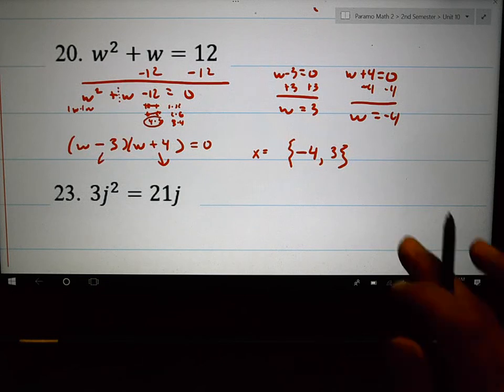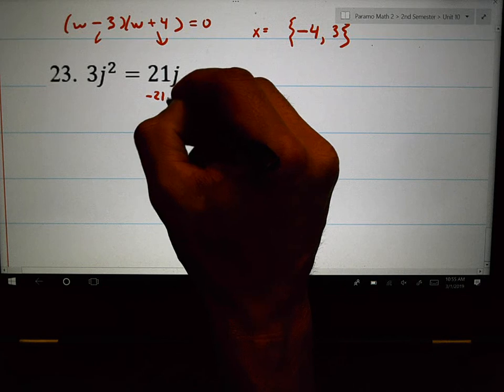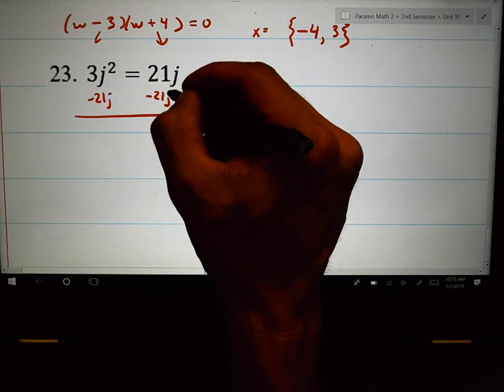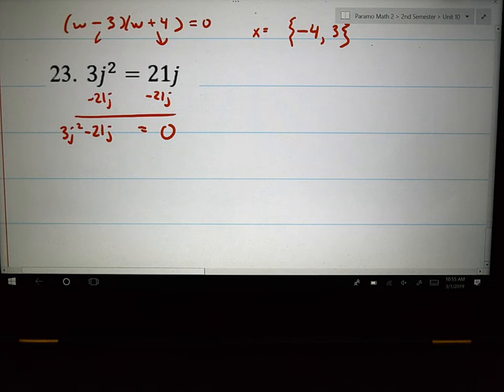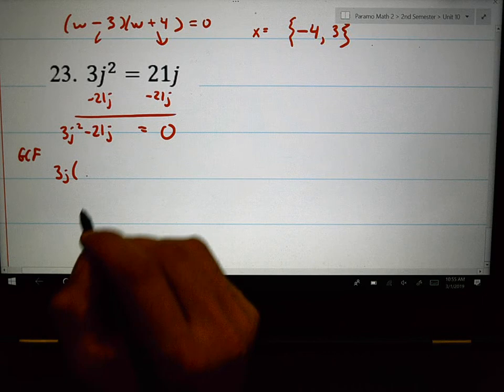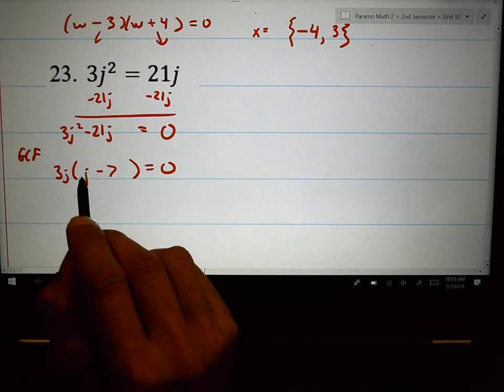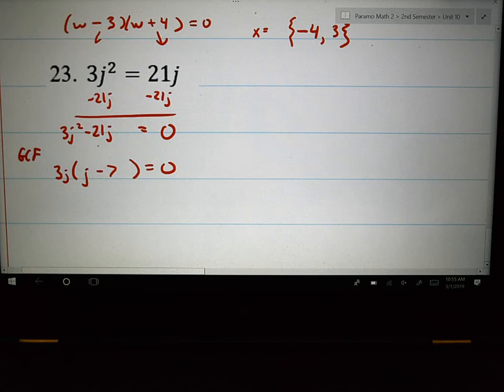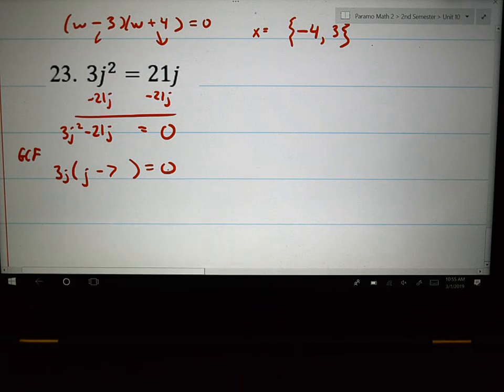My last example is 23. 23. It doesn't equal zero. Well, subtract the 21j. 21j minus 21j is zero. Then it will equal zero. And you can't put those together. 3j squared minus 21j because they're not the same amount of j's. J squareds can only be combined with j squareds. J's can only be combined with j's when you're adding and subtracting. And then what we're going to do is we're going to use a GCF factoring. What if I factor out a 3j? Would that make 3j times j is 3j squared minus 7? This times this is that. This times that is that. Now even if there's just a GCF but it multiplies the equal zero, we can still use the zero product property.